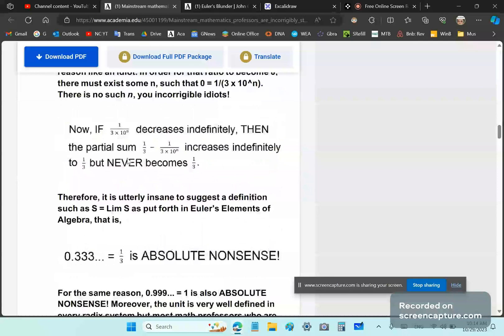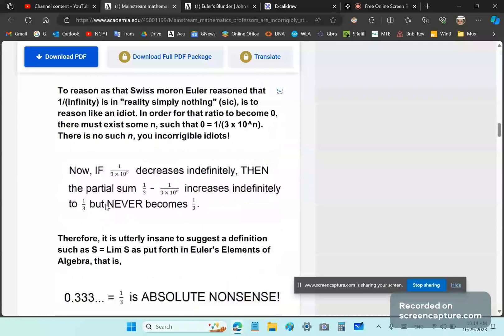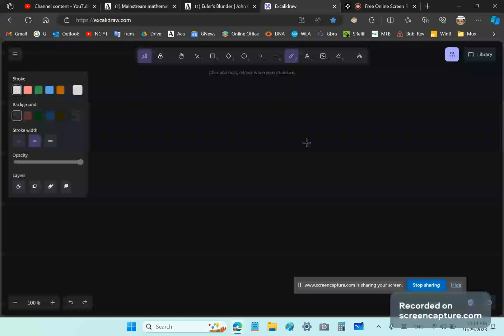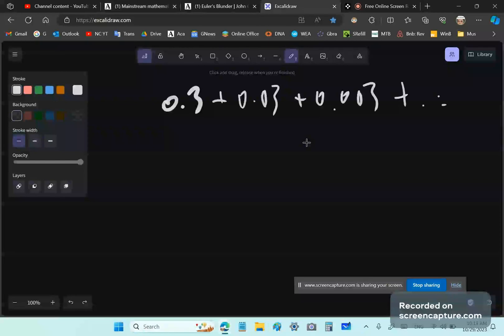Because in order for that ratio to become 0, this ratio here, this expression, there must exist some n such that 0 is equal to that. There is no such n. Do you understand that? You cannot find such an n. Now if this decreases indefinitely, then the partial sum increases indefinitely to one third, but never becomes a third.